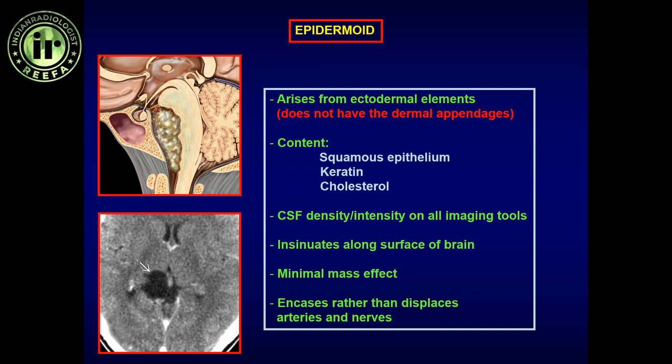It tends to be centrally located rather than peripheral, but can happen anywhere in the brain. The most common location is the CP angle. In fact, all three — dermoid, epidermoid, and teratoma — tend to be located centrally, and among central locations, more frequently in the sellar, suprasellar, and CP angle regions. Majority of cases are in this location.